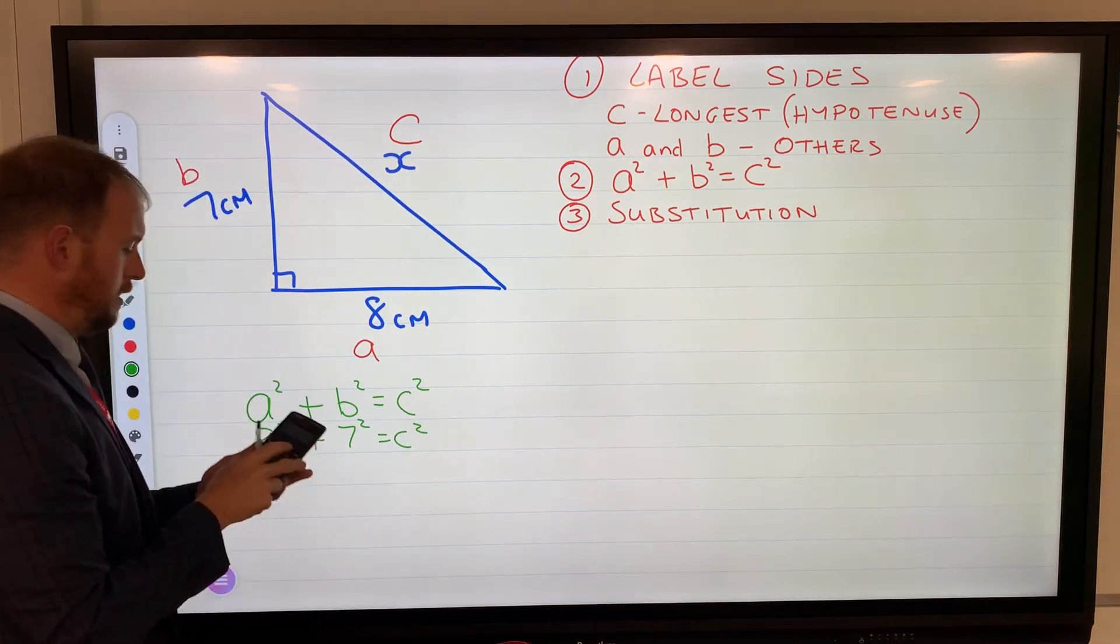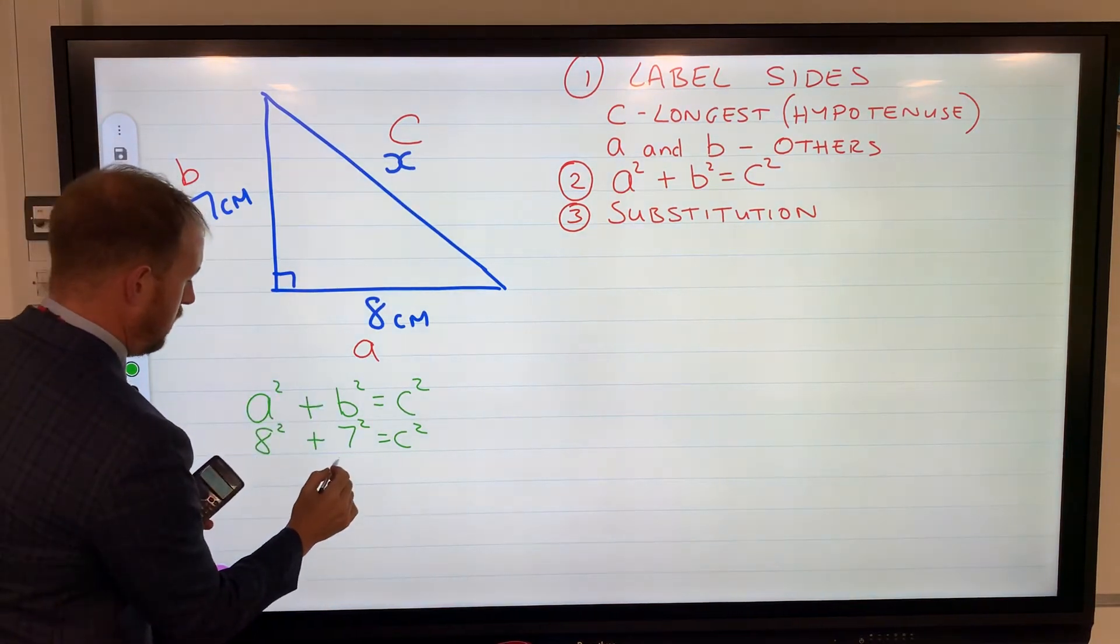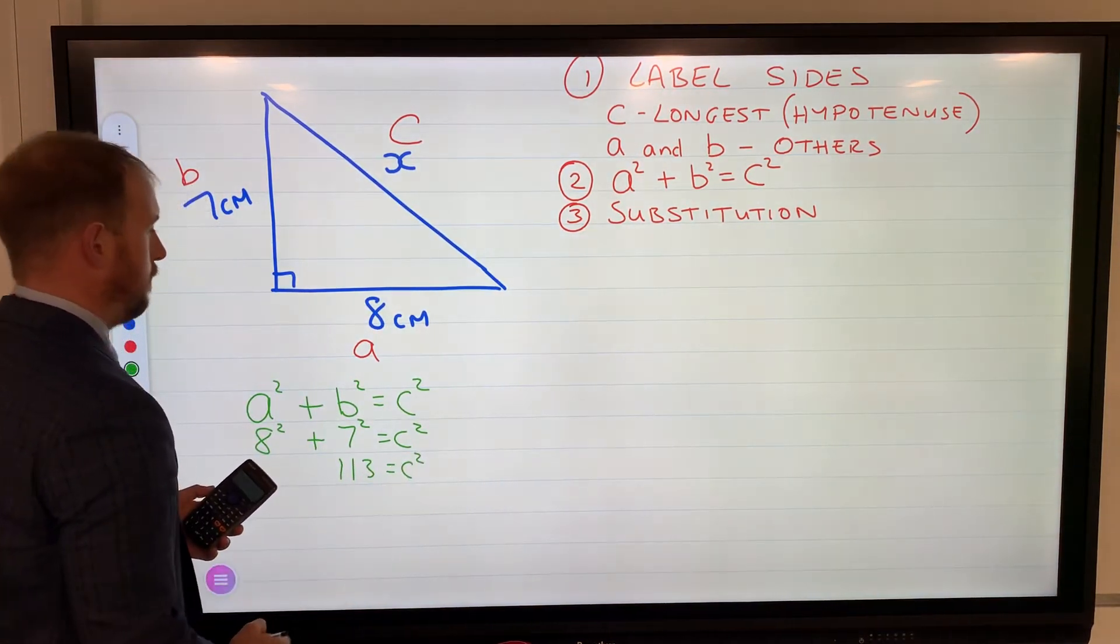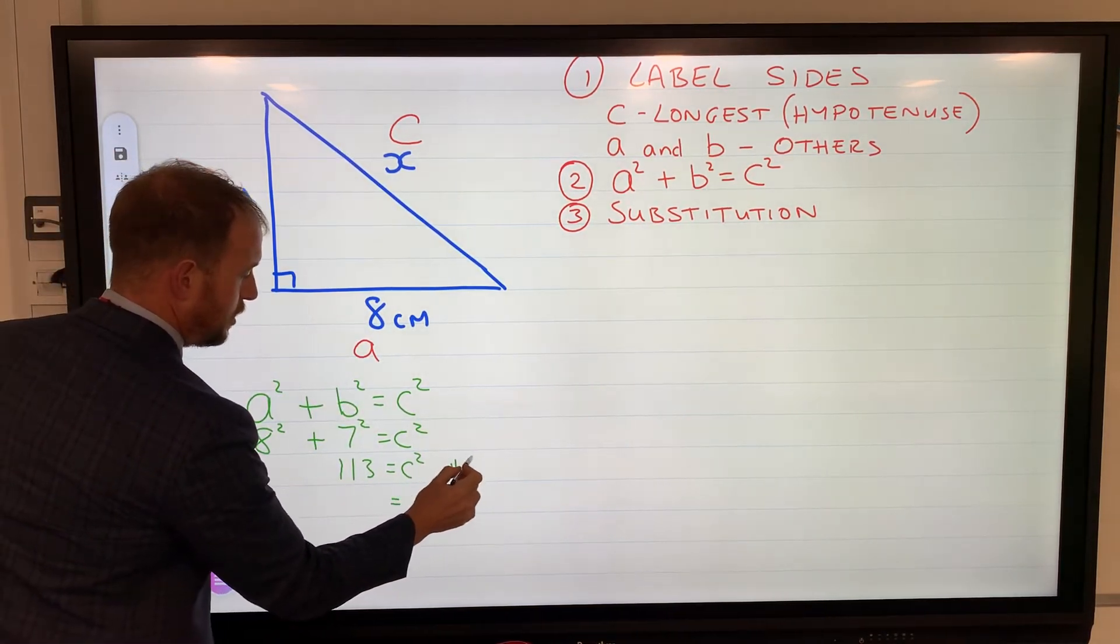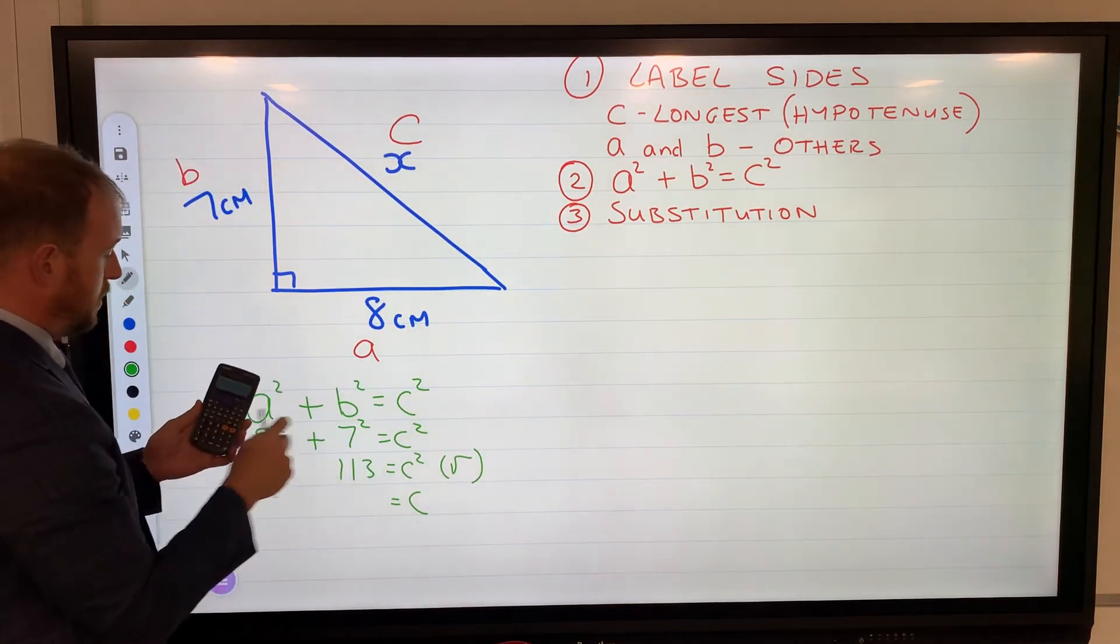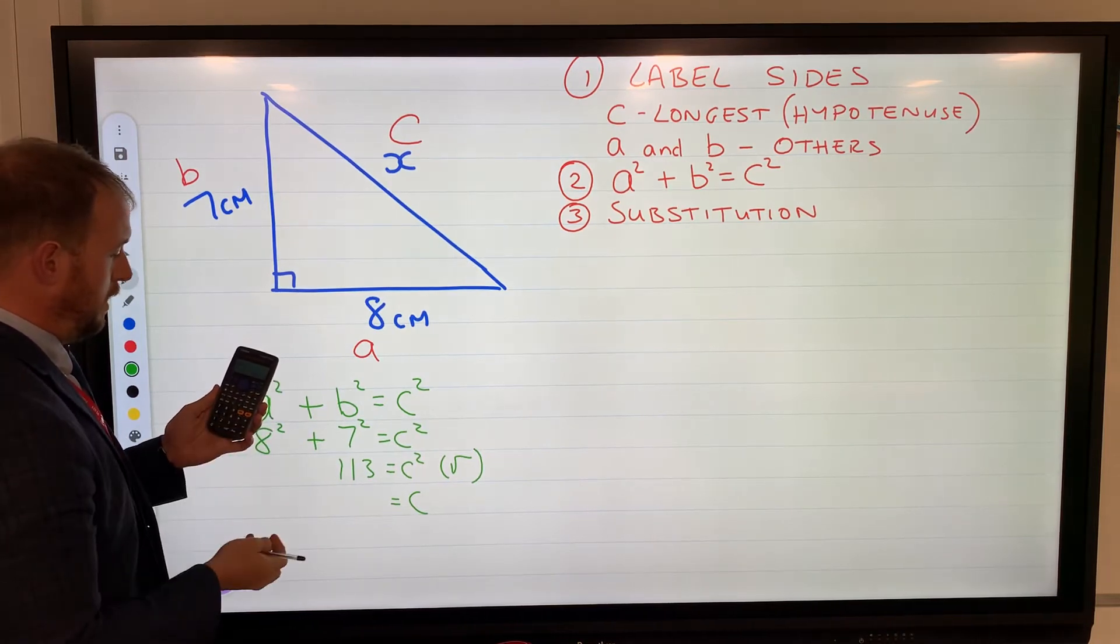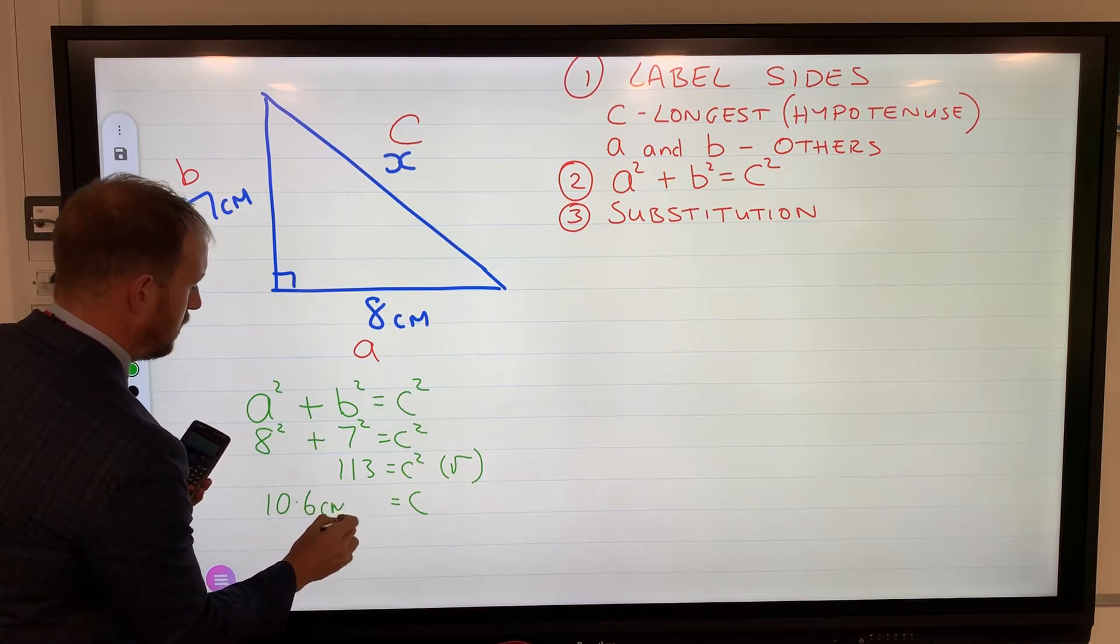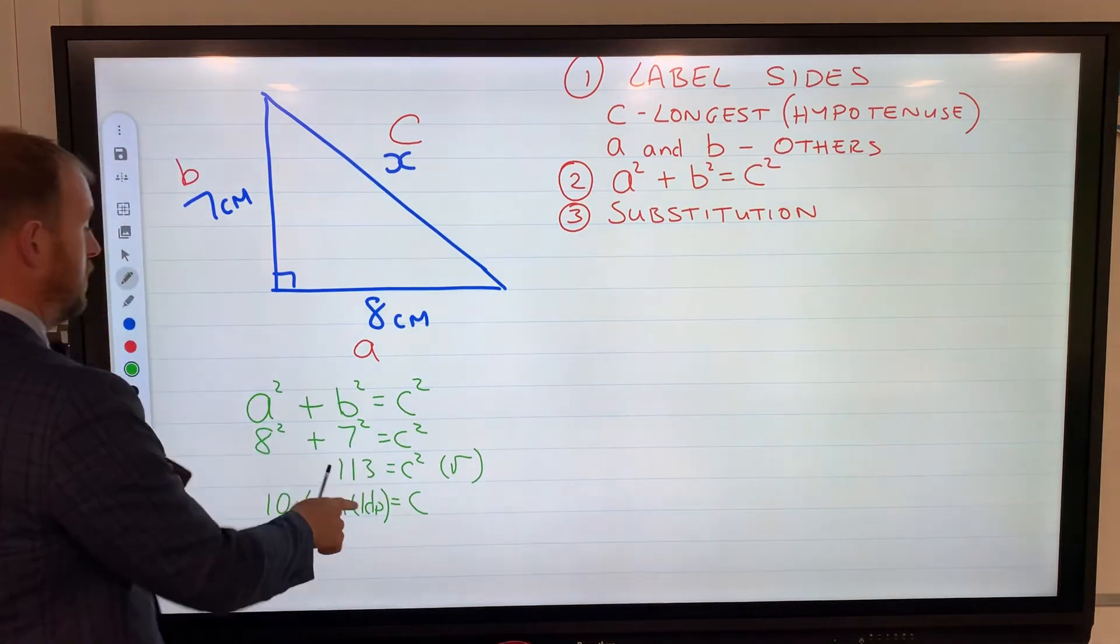Use my calculator: 8 squared plus 7 squared equals 113. I've done substitution. My last step is I need to solve by using the inverse of square to square root. Square root of my answer equals 10.6. I've got 10.6 centimeters to one decimal place. Be careful of what the question's asking for in terms of rounding.